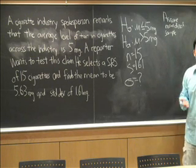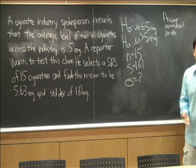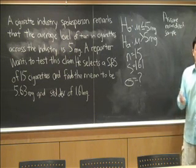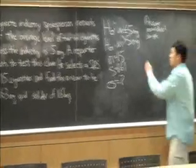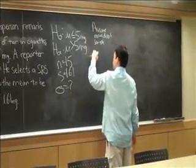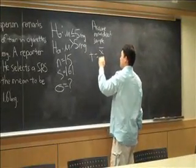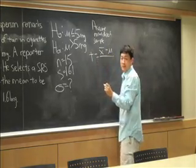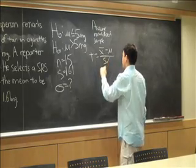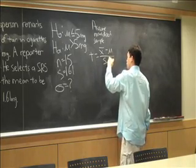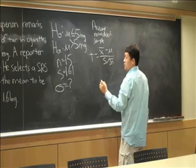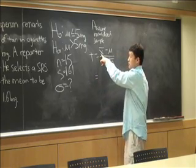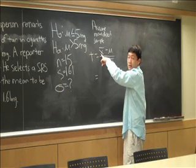The next thing to do is to calculate the testing statistic. To calculate the testing statistic, we use the formula: T equals the sample mean minus the hypothesis mean divided by the sample standard deviation over the square root of the sample size. In this case, we've got 5.63 milligrams as the sample measured mean.